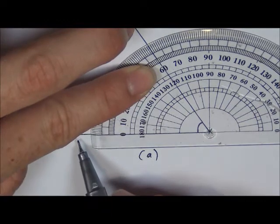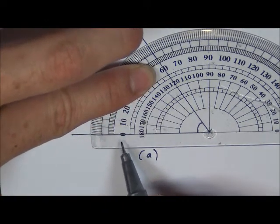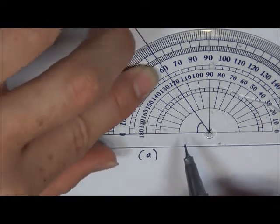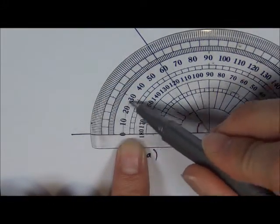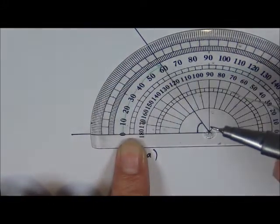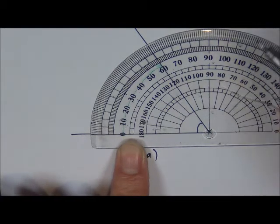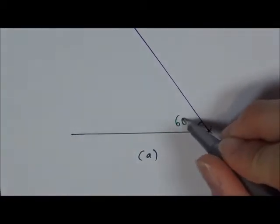This line here crosses onto the protractor line. And I just read from zero. If it starts from here, I read from zero, zero up to 60. So therefore the angle here is 60 degrees.